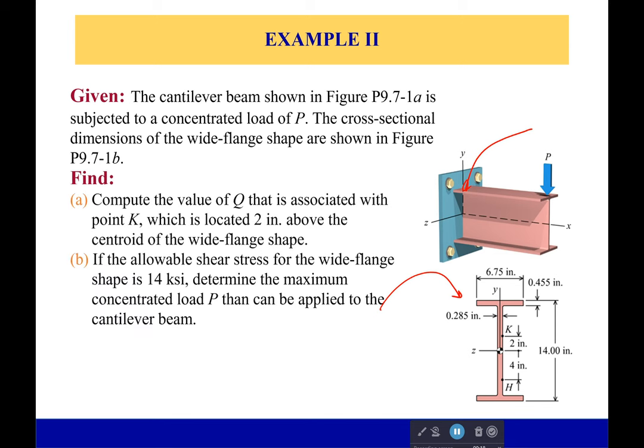Now, what do we want to calculate? We want to find the value of Q that's associated with point K, which is right here, about two inches above the centroid. Also, if the allowable shear stress for the wide flange shape is 14 KSI, determine the maximum concentrated load P that could be applied to that cantilever beam.